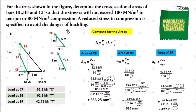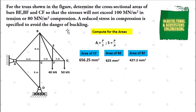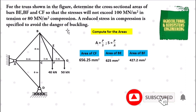That is now the solution for our problem. In summary: the cross-sectional area of CF is 656.25 square millimeters, the cross-sectional area of BE is 625 square millimeters, and the cross-sectional area of BF is 427.2 square millimeters. Please do not forget to subscribe before you exit.